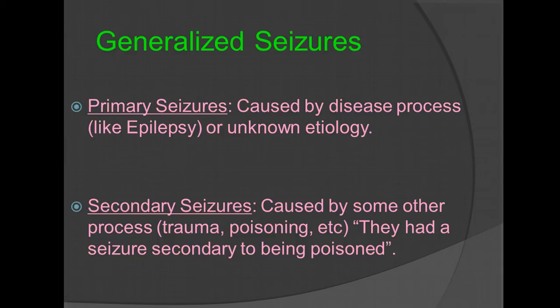A good way to look at it is they had a seizure secondary to being poisoned. Sometimes you may encounter patients who've been assaulted, and blunt force trauma may have been the cause. A secondary seizure may follow. Also, with poisonings, you may want to consider certain things like environmental self-poisoning, such as an interaction or reaction with drugs, be it prescribed or illicit drugs.